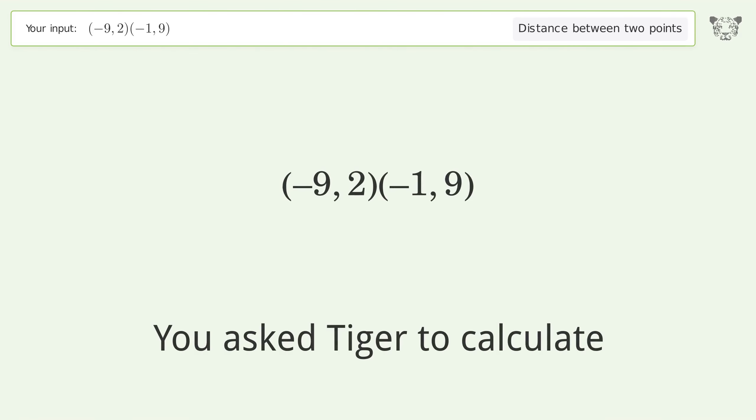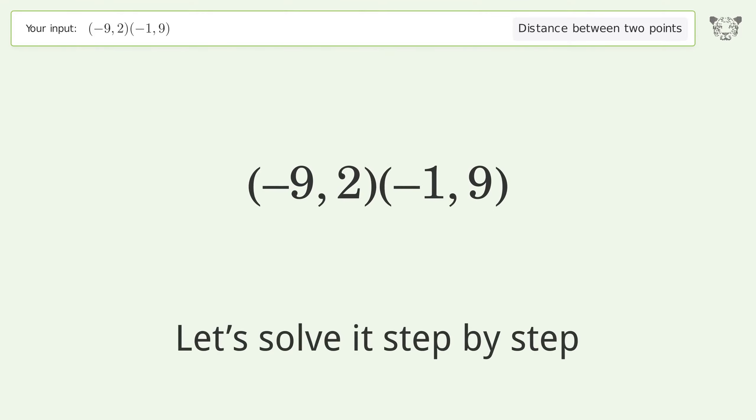You asked Tiger to calculate the distance between two points. The distance between the two points is the square root of 113, or 10.63. Let's solve it step by step.